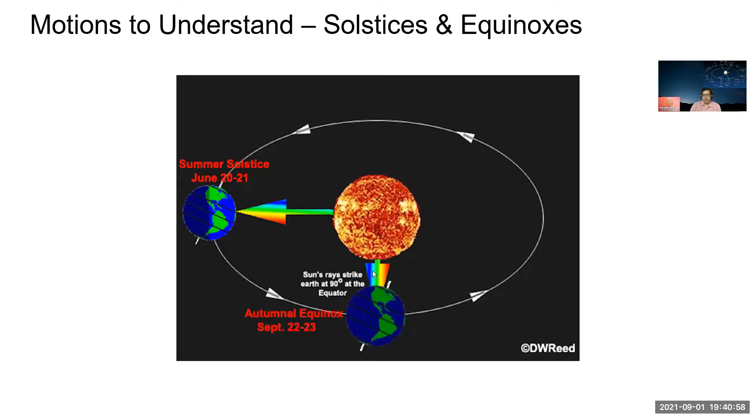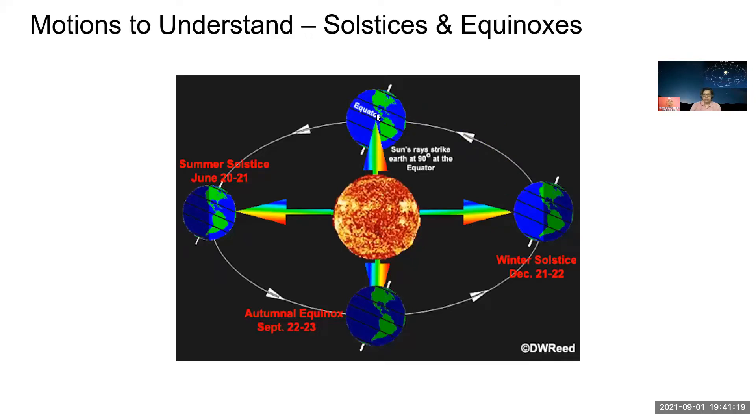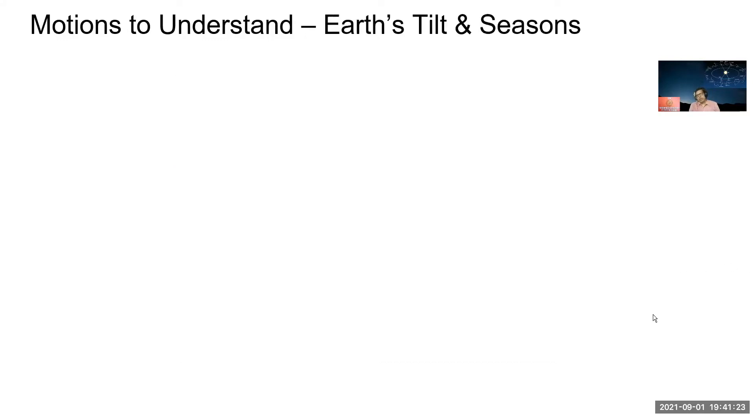It now came to the equator and this is the autumnal equinox. And then here again it goes to the lower hemisphere, the southern hemisphere. It goes to the Tropic of Capricorn. And then if you go to that side, it will again be directly sun rays will come directly 90 degrees at the equator. This is equinox, vernal equinox. So these two are equinoxes, these two are solstices.